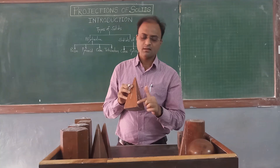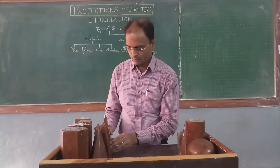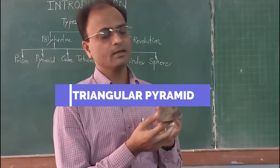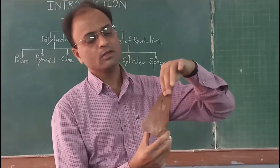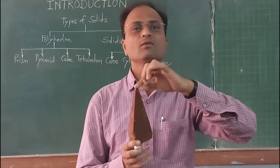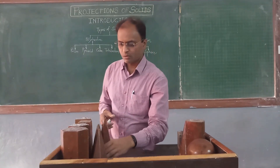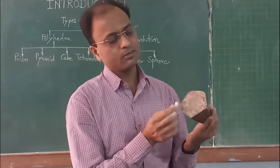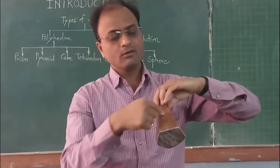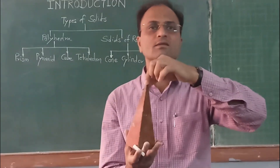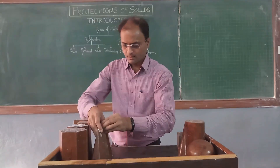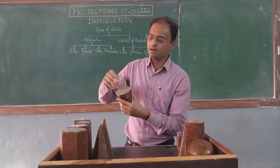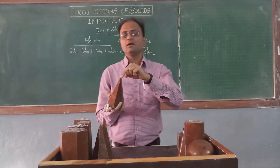In a pyramid, the slant edge from the apex to the base corner is called the slant height. We also have a triangular pyramid, where the base is a triangle and three bounding triangular surfaces merge at the apex. A pentagonal pyramid has a base in the shape of a regular pentagon and five bounding triangular surfaces merging at the apex. A hexagonal pyramid has a hexagonal base with six bounding triangular surfaces merging at the apex.